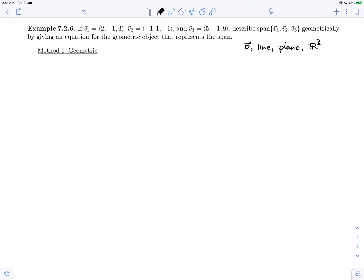To determine which of these geometric objects we have as this span, we need to look at the geometric relationship between these vectors. The first thing we can notice is that none of the vectors are zero, and that immediately means that the point of the origin is not the span that we have. So we need to see if we have a line, a plane, or all of R3.